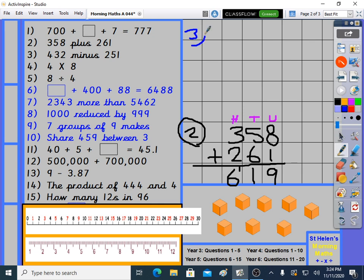Question 3: We have our column subtraction practice. 432 minus 251. Just switch your brains to minus if you need to. I'll put my hats on: units which we call ones sometimes, tens and hundreds. 2 take away 1 is 1. 3 take away 5, you can't do that.